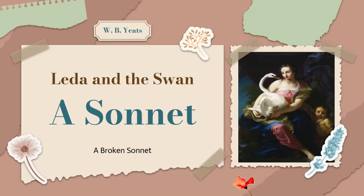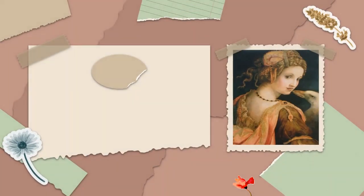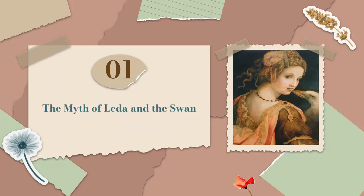Let us see the story of Leda and the Swan and why the poem is written. But beforehand, let me introduce some historical and mythological background. There are different versions of the myth, but my intention here is to introduce what was intended by Yeats. There are variations in the whole story, but let us stick to what was in the mind of the poet when he wrote it.